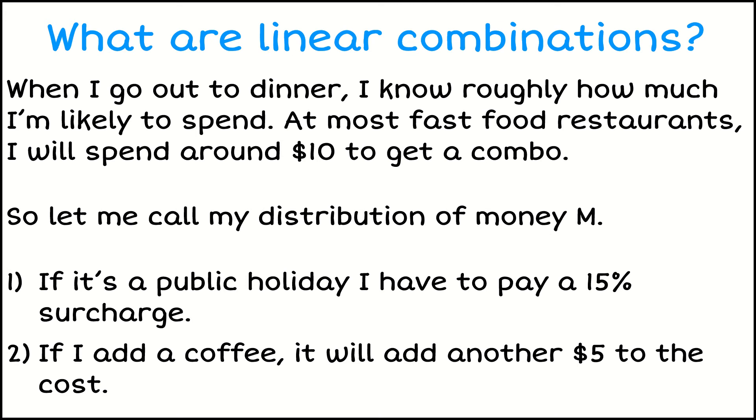Now if I go out on a public holiday, there's always a surcharge. I take whatever this amount M is and I need to multiply that. I need to increase how much money I'm going to spend, and in this case I'm going to increase it by 15%. So I'm taking my distribution M and I'm multiplying it by a constant. Another example is if I want to add a coffee to my meal, that's usually about $5 more. Whatever the cost of my meal is, I'm adding another $5 on top. So that's when I would add a constant amount.